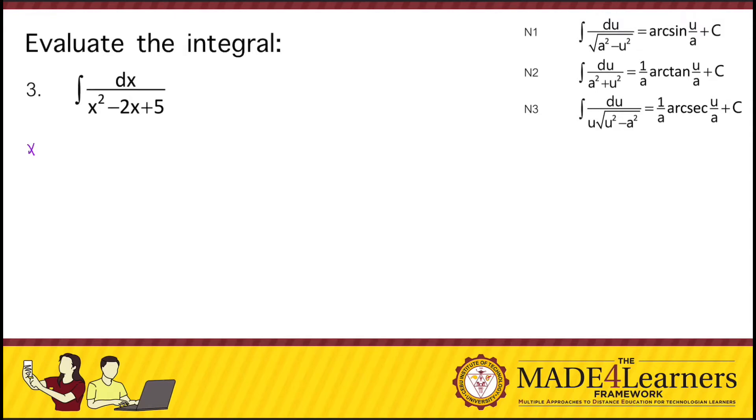So this x squared minus 2x plus 5 can be written as, we're going to group together the terms with a variable, so that's x squared minus 2x, and look for the missing constant that would complete the square.